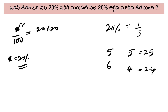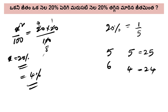20% is 1 by 5. 20 by 100 simplifies to 1 by 5. So 21 is 25, meaning 5 is 1 fold. The inflation is 4 per hundred, 4%. The first method is without formula: 20% is 1 by 5, so 20 by 100 gives 1 by 5. 21 is 25, so 1 by 5.